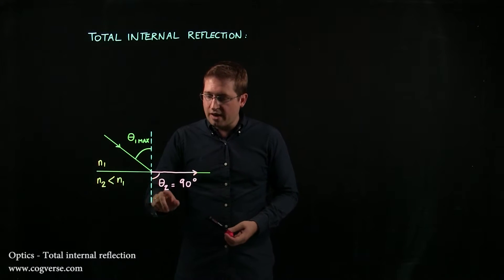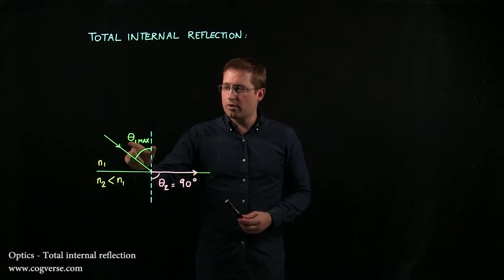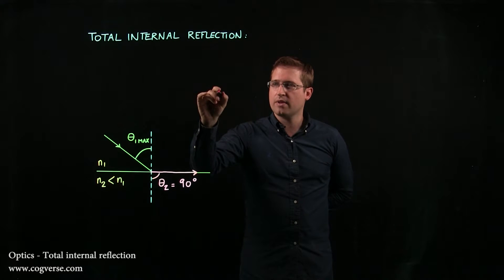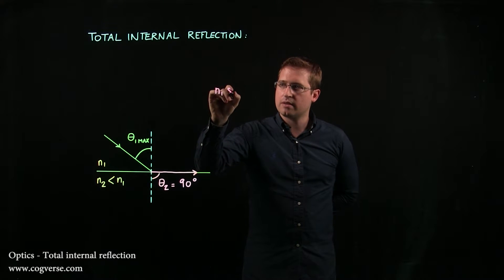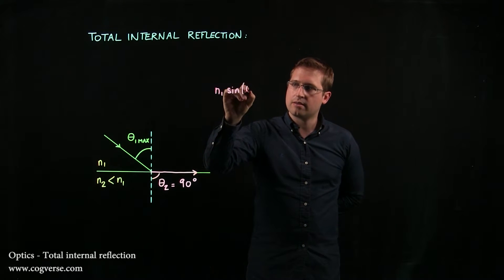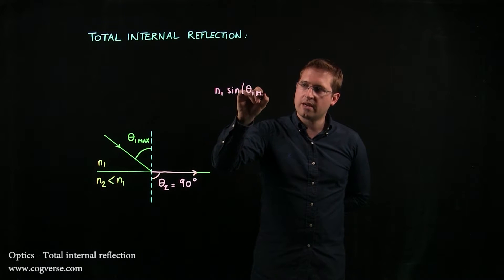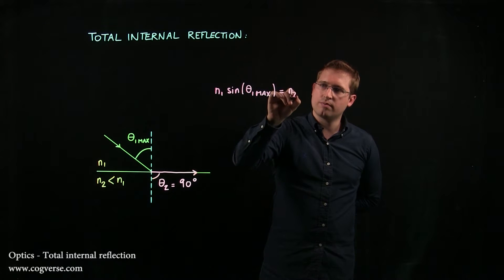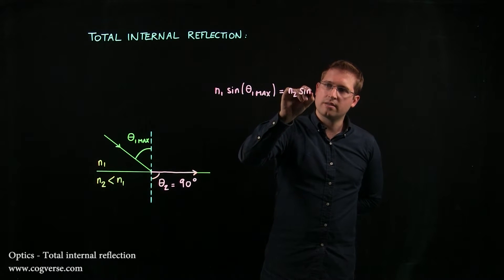And if we want to find the value of theta 1 max, given that theta 2 is 90, we can use Snell's Law and write that N1 sine theta 1 max is equal to N2 sine theta 2.